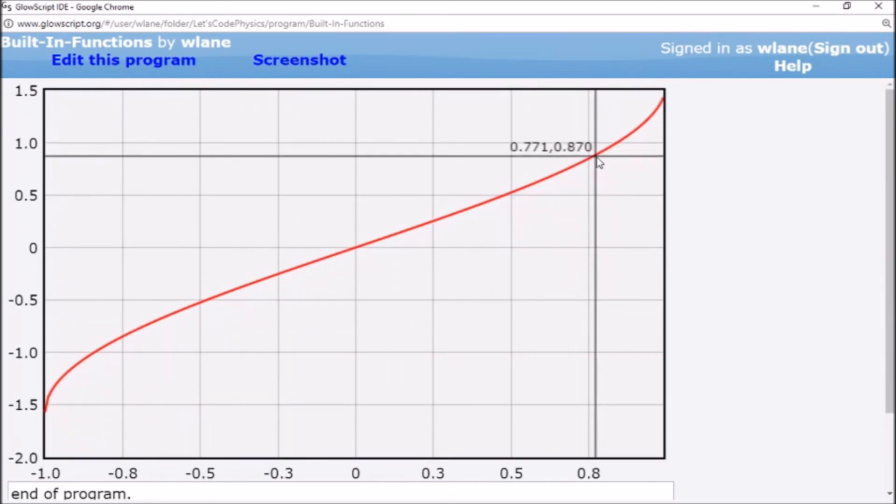So, in other words, if I want to know what angle will give me a sine of 0.8, from here, I can see that that is about 0.86 something.